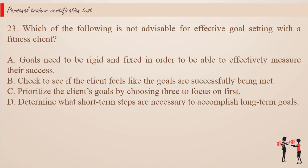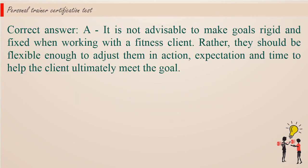Question 23. Which of the following is not advisable for effective goal setting with a fitness client? a. Goals need to be rigid and fixed in order to be able to effectively measure their success. b. Check to see if the client feels like the goals are successfully being met. c. Prioritize the client's goals by choosing three to focus on first. d. Determine what short-term steps are necessary to accomplish long-term goals. Correct answer a. It is not advisable to make goals rigid and fixed when working with a fitness client. Rather, they should be flexible enough to adjust them in action, expectation and time to help the client ultimately meet the goal.